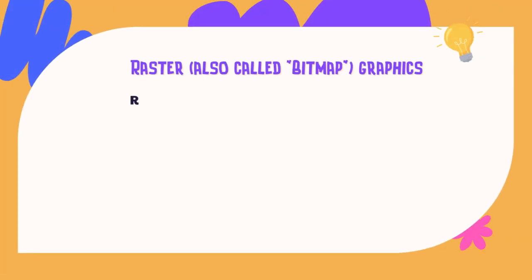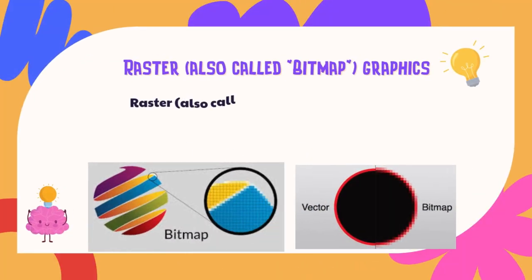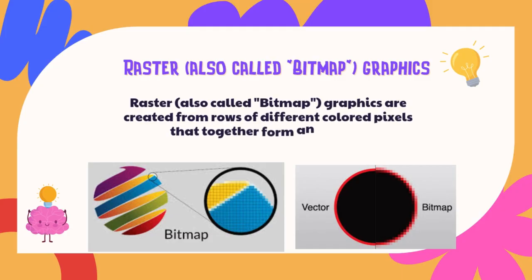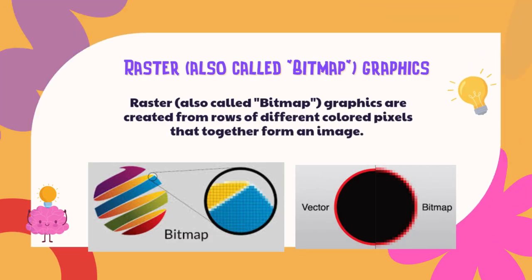Raster, also called Bitmap, Graphics are created from rows of different colored pixels that together form an image.